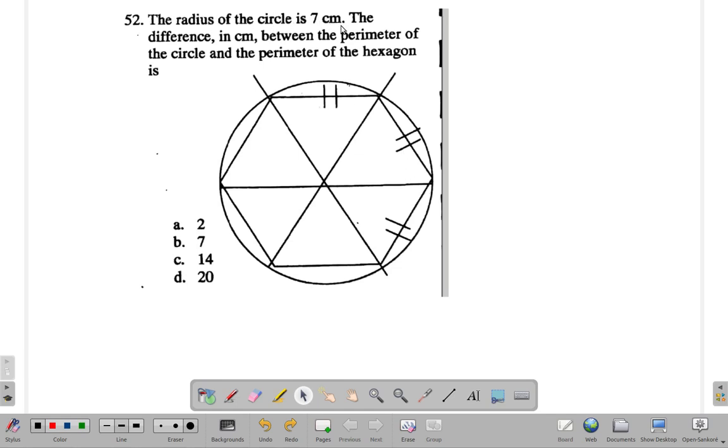Alright, what did you get? Here, the radius of a circle is 7 cm. Of the circle. That's the circle. The difference in cm between the perimeter of the circle and the perimeter of the hexagon is...